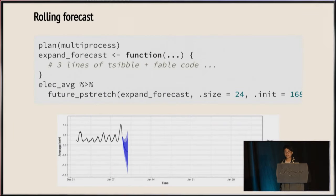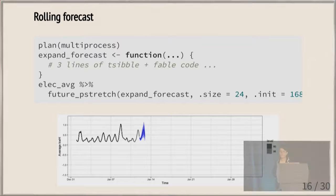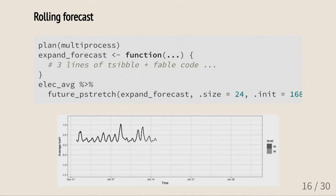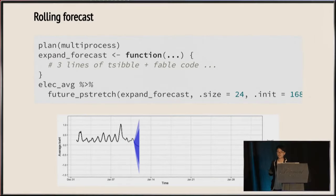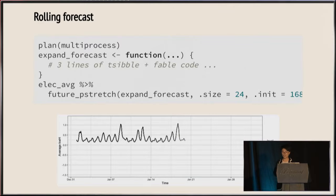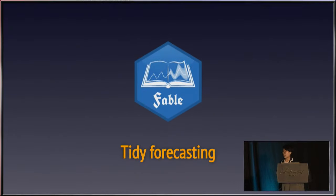A more advanced but extremely useful example is rolling forecast. I defined a custom function called expand_forecast and enabled parallel processing using future_pstretch. It's never been that easy to do expanding forecasting. A nice thing about functional programming is we can focus on writing expressions instead of writing a long for-loop. What code goes into expand_forecast brings us to the next part of the presentation: tidy forecasting.